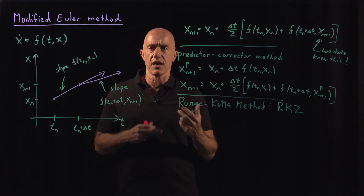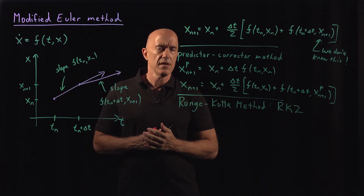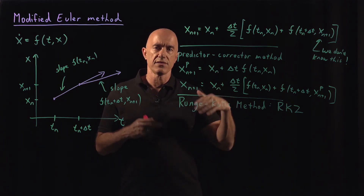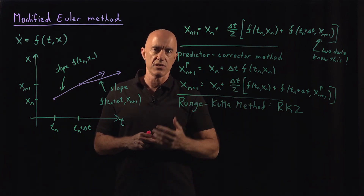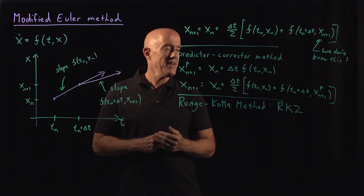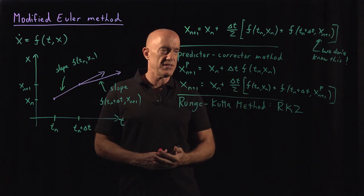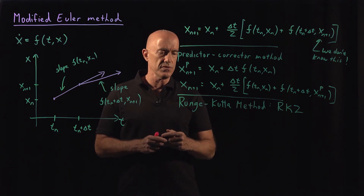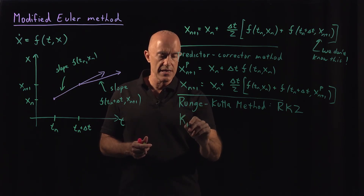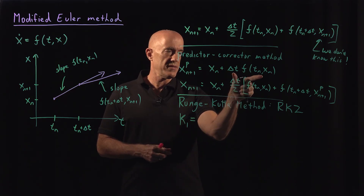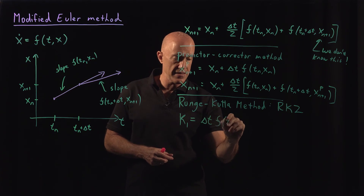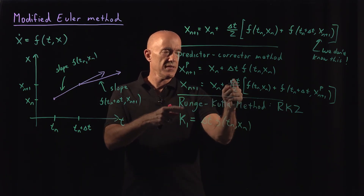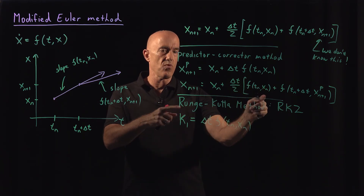The way one writes a Runge-Kutta method is in terms of stages: stage one and stage two. Traditionally you use the symbols K1 and K2. We define K1 in the first stage as delta-t times f of t_n, x_n. This K1 will show up in our final solution — delta-t times f of t_n, x_n is our K1.